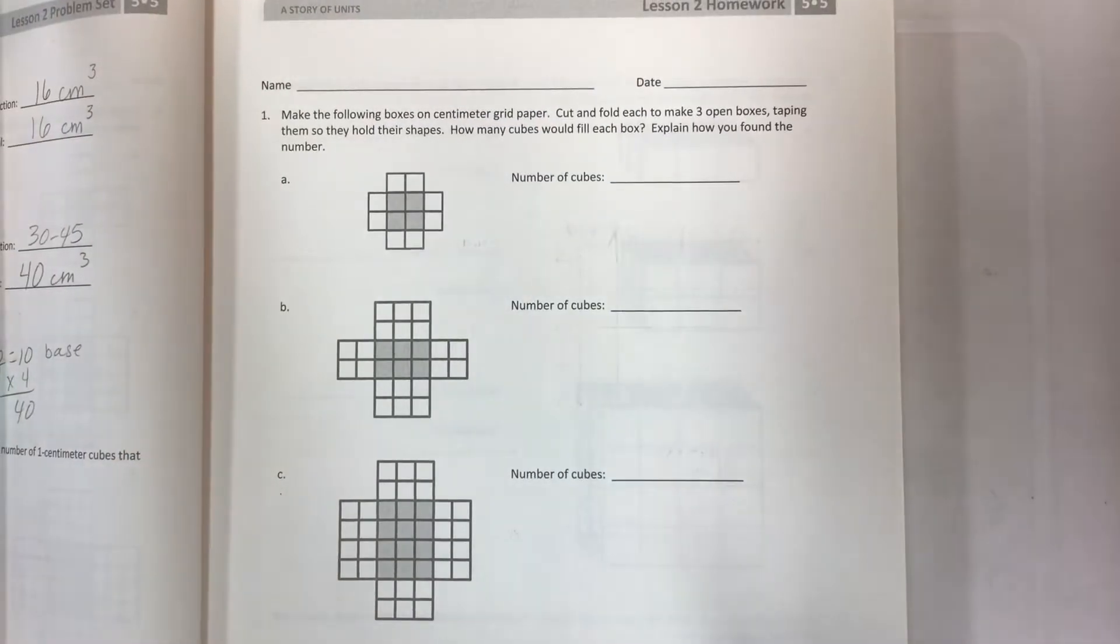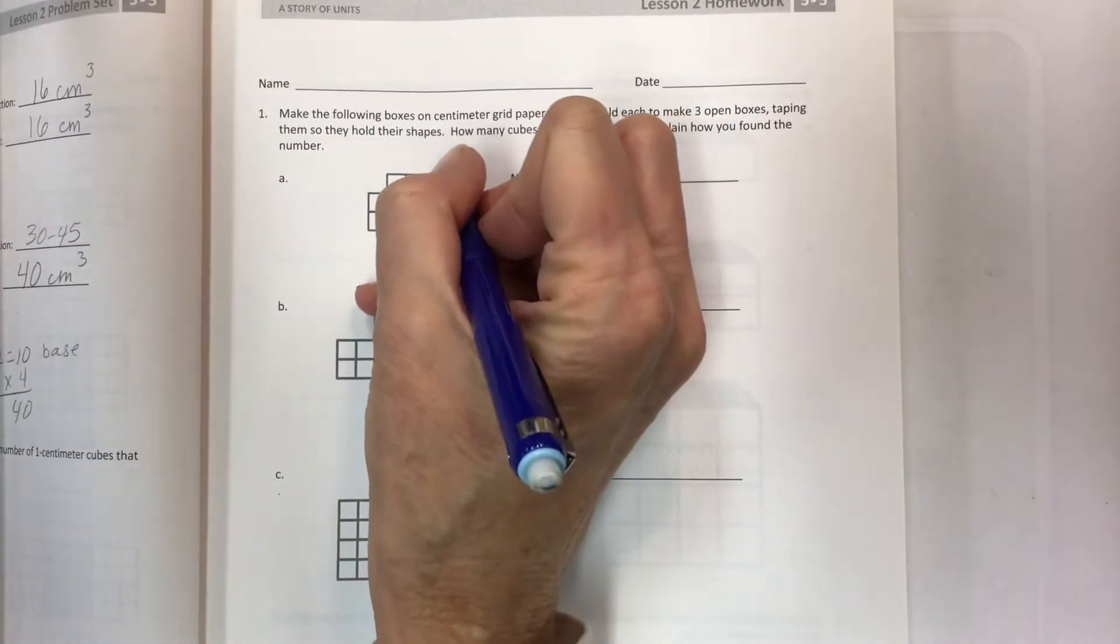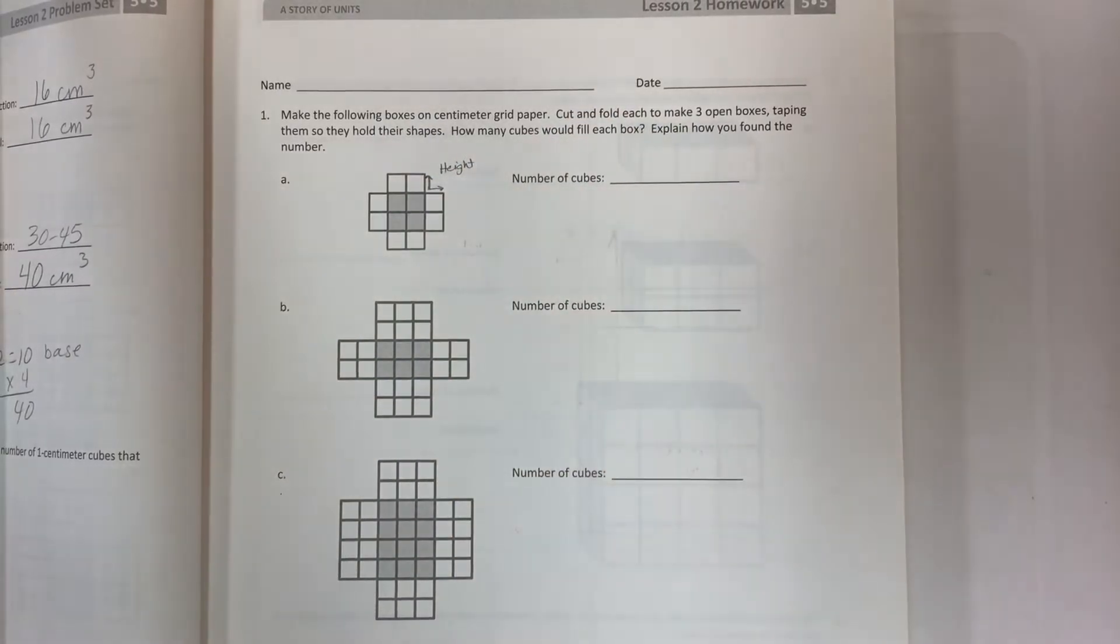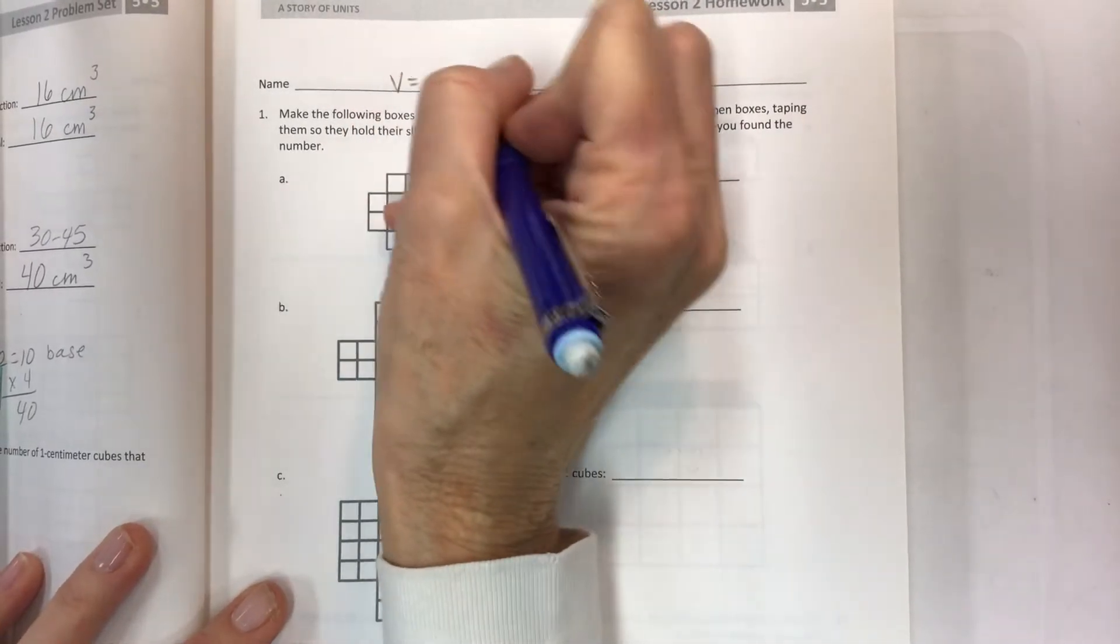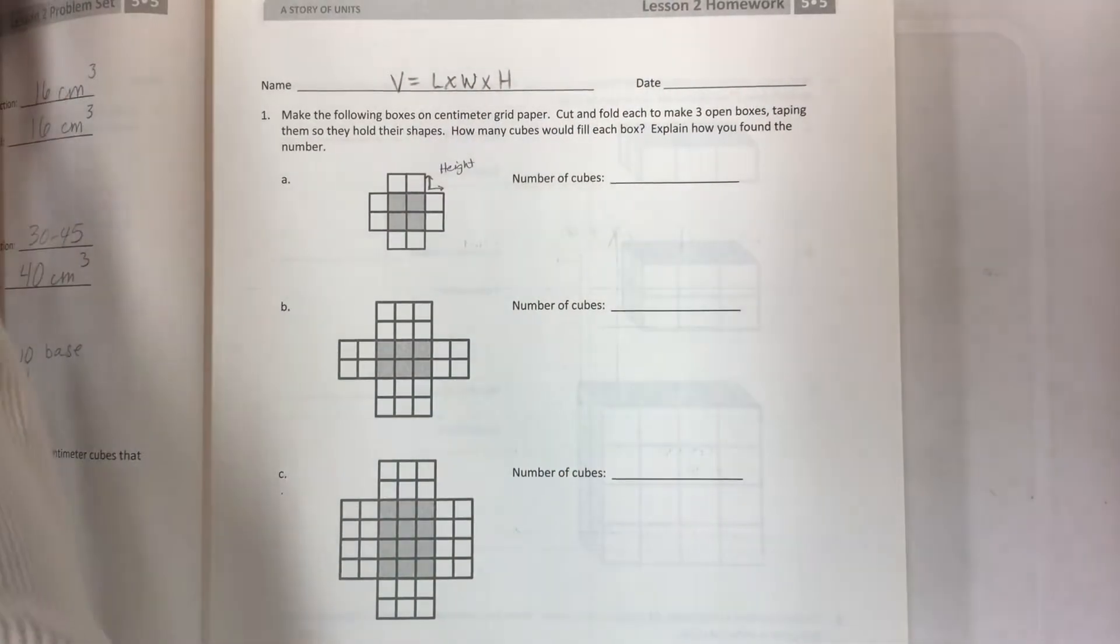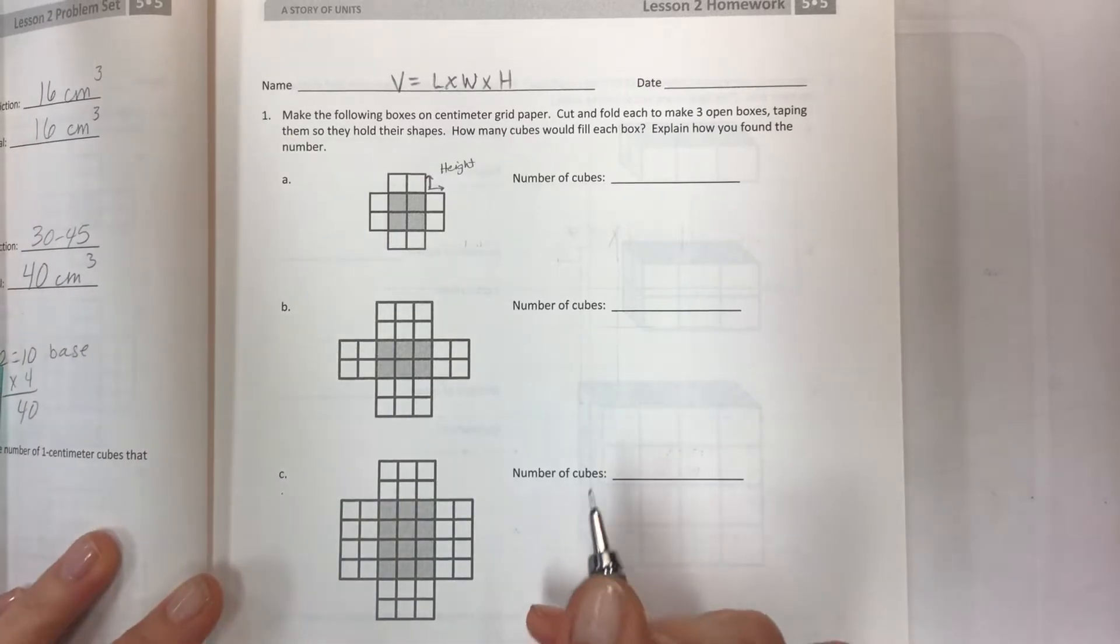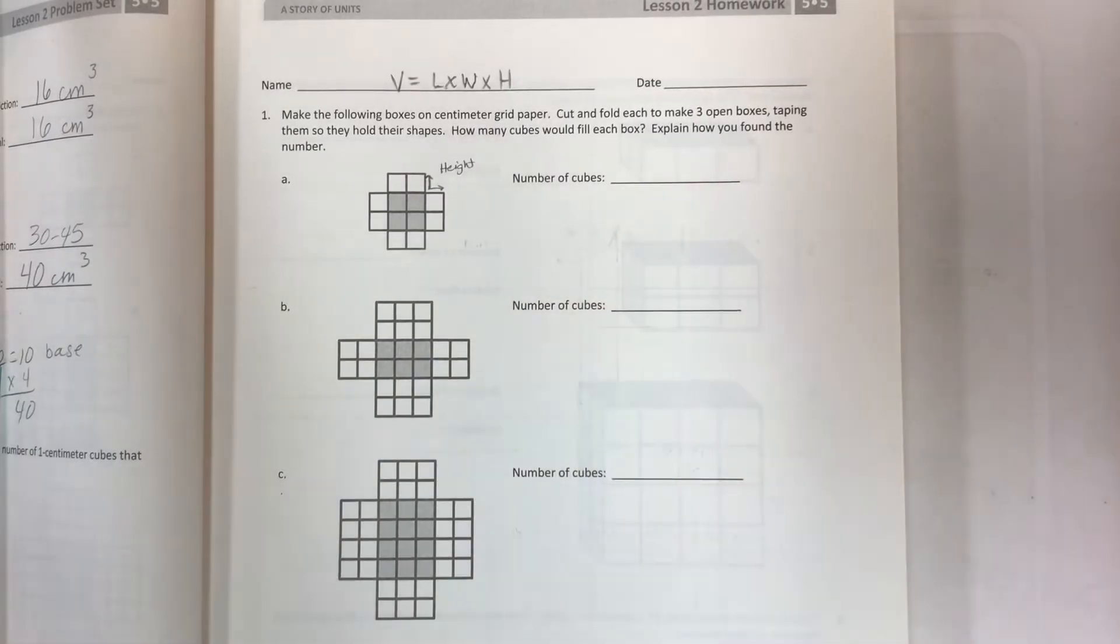Most important thing on these is that the height is this little piece here, and that is going to help you with your formula. Your formula for volume is length times width times height. The length and width are pretty easy to see, but the height on these folded out pieces sometimes throws people off.